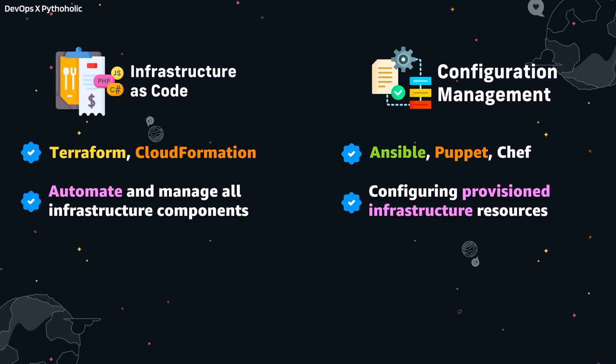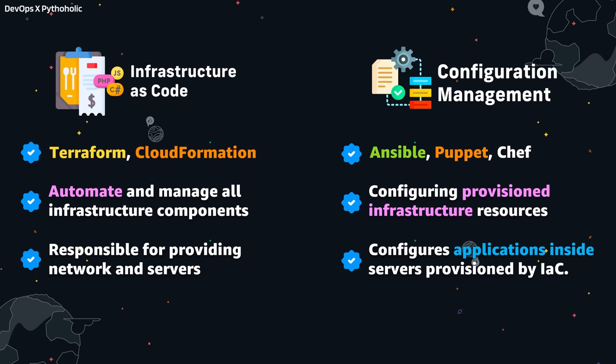IaC is helpful when it comes to automating and deploying infrastructure resources on demand. On the other hand, configuration management helps configure the already provisioned resources — like servers that were already provisioned. IaC provisions infrastructure resources such as compute, network, and storage, while config management helps configure applications on the servers provisioned by IaC.